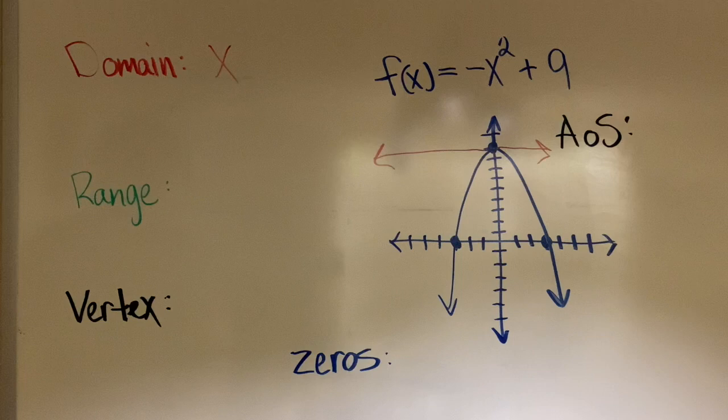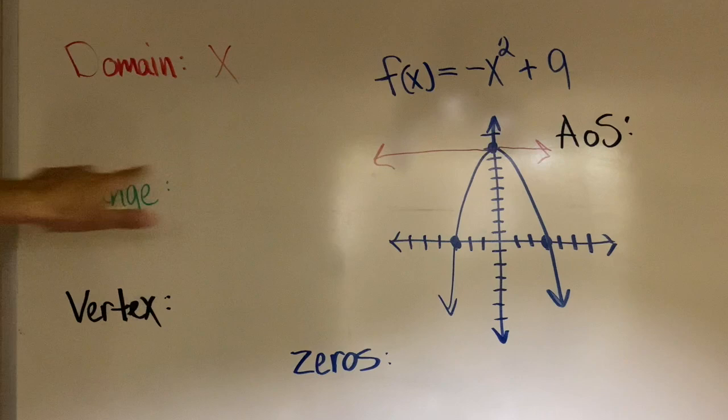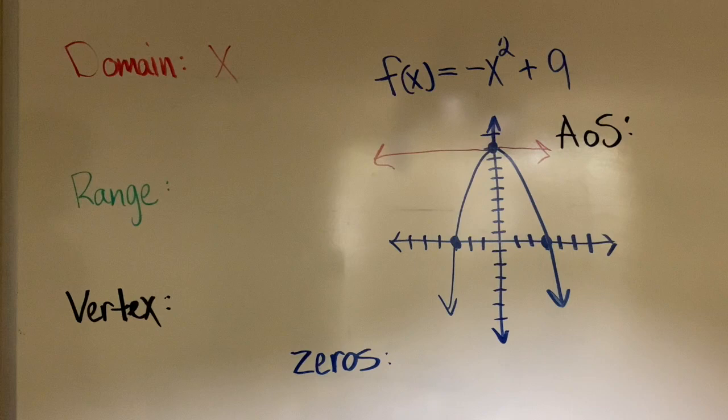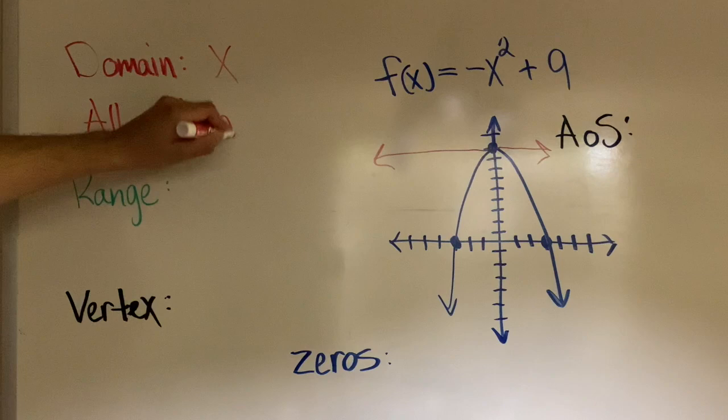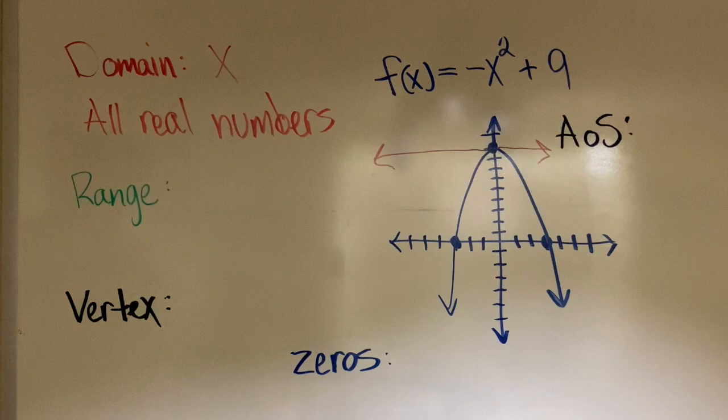I would be able to tell that the parabola is going to negative infinity and to positive infinity, which would mean that the domain of this particular graph is any number of x, which would mean that the domain is all real numbers.